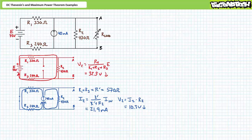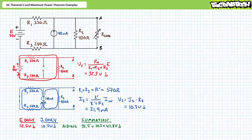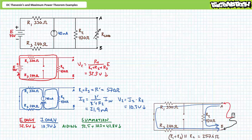We now need to summate these two results, accounting for magnitude, polarity, and direction, to determine the Thevenin's equivalent voltage seen by the load resistor. The open circuit voltages produced by the voltage source and current source are in the same direction — these are aiding contributions. Therefore, 32.5 volts plus 10.3 volts means the open circuit voltage is 42.8 volts, oriented positive to negative, top to bottom.